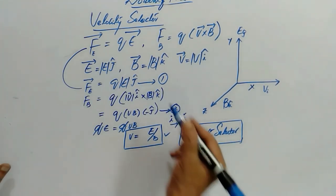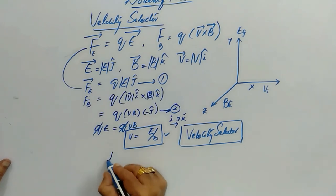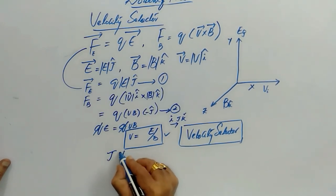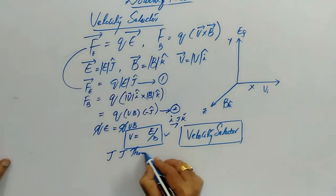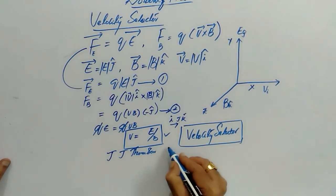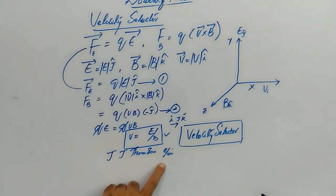This method was initially employed by J J Thomson to find the specific charge ratio E by M of an electron. He has taken the two fields perpendicular to each other. At the same time he has selected the force should be the net force experienced by the charged particle is zero. That means the two forces must be acting with equal magnitudes and opposite in direction.